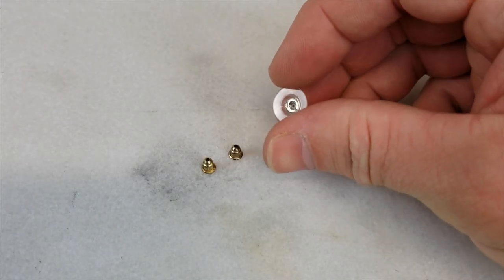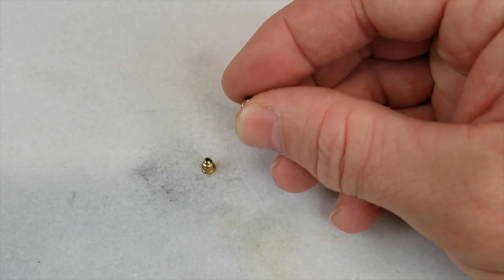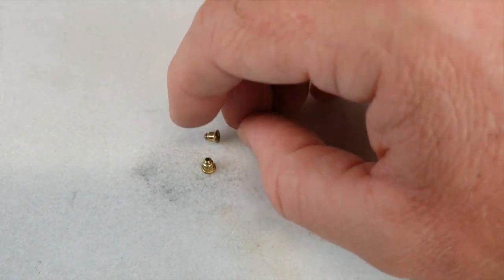These earring backs can be found in any craft store or Walmart in the jewelry section or of course Amazon. You can use either style here. You'll just have to remove the plastic backing on the one style which just pops right off.